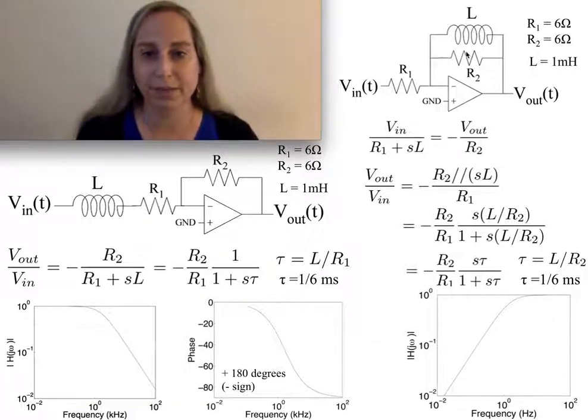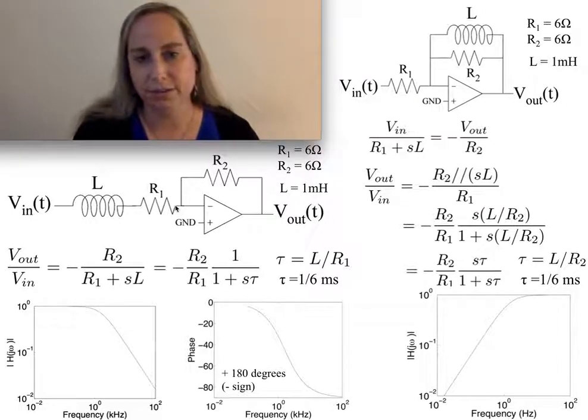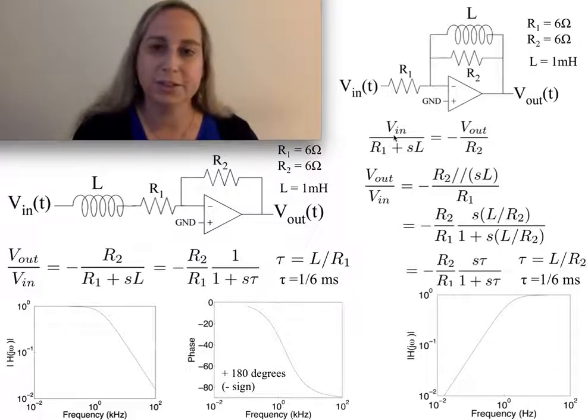This is where you start. You can talk about a circuit something along this line. What you begin to realize is that if I do KCL at this node, I get this equation: V_in over R1 plus SL equals minus V_out over R2.